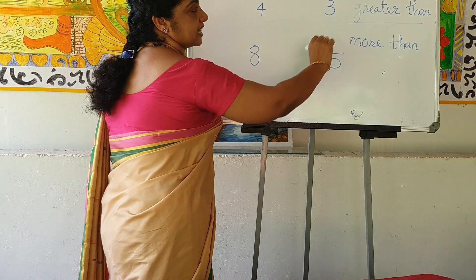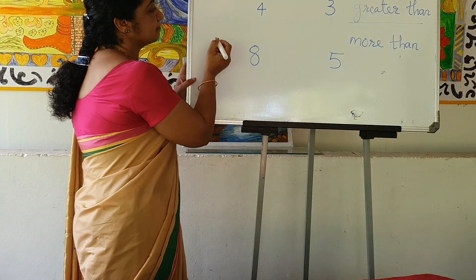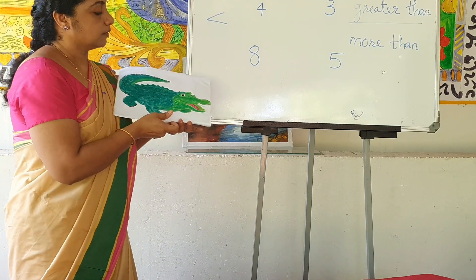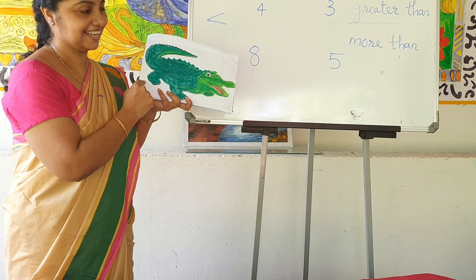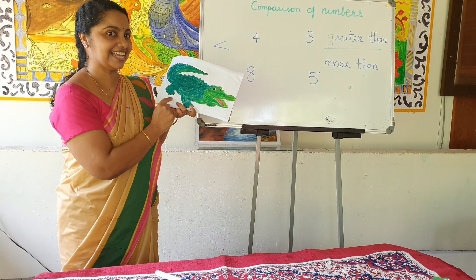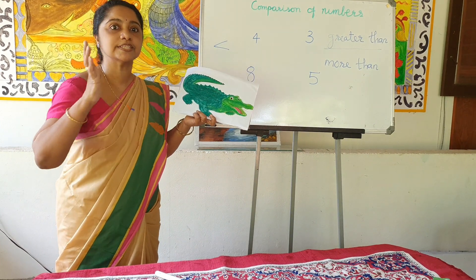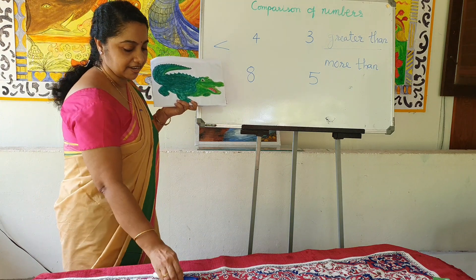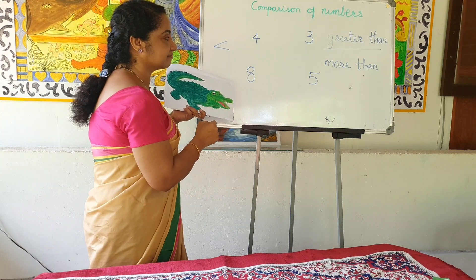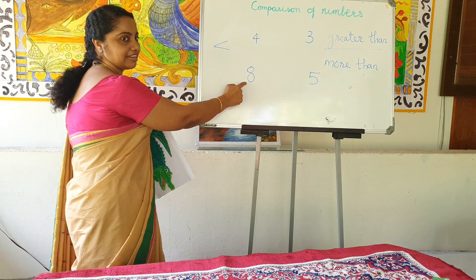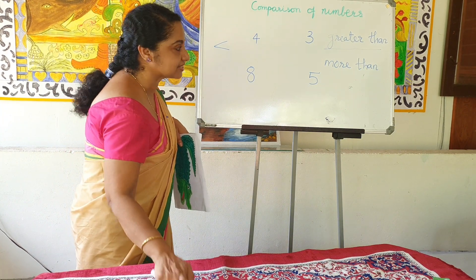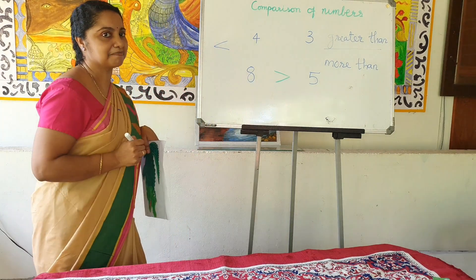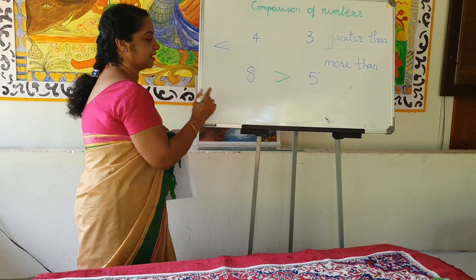For denoting greater than, we use a symbol like this. Now look at this picture — do you know who this is? This is Mr. Ali, the alligator. He always wants to eat the biggest number. He doesn't like any small number — he likes the big number. Ali's mouth opens always towards the big number. So 12 is bigger than 10, or we say 12 is greater than 10.